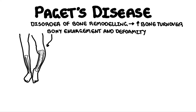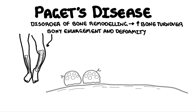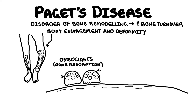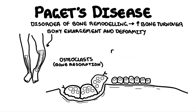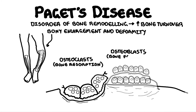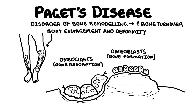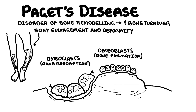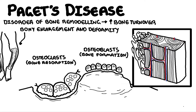Let's talk about some physiology. There are two important cells in the bone: the ones that break down bone, termed osteoclasts, and the ones that build new bone, called osteoblasts. Both normally work together in harmony to maintain bone structure and strength. The bone formed will eventually become strong lamellar bone, which is a highly organised structure with circular layers of collagen alternating with longitudinal layers of collagen.